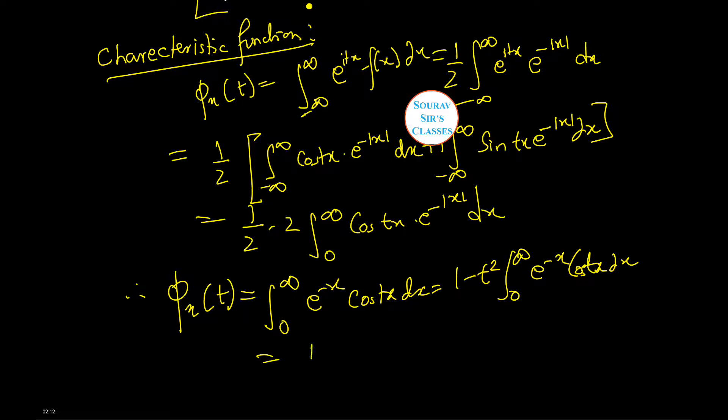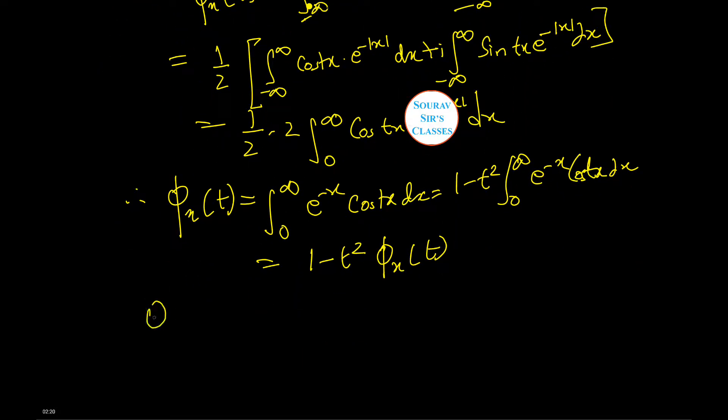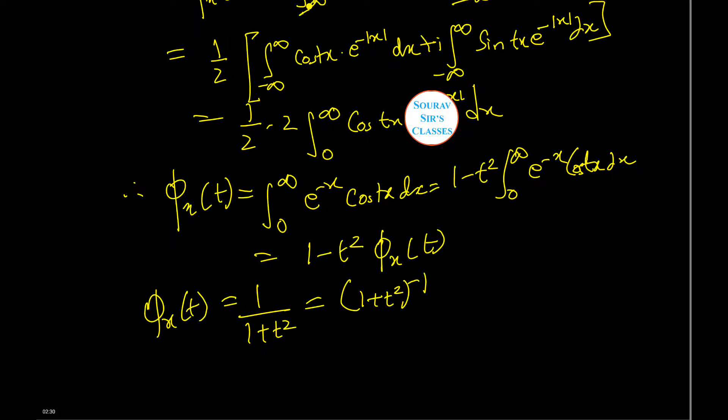On integration by parts, one minus t squared psi_X(t). That is, psi_X(t) is equals to one by one plus t squared, which is equal to (1 + t²)^(-1).